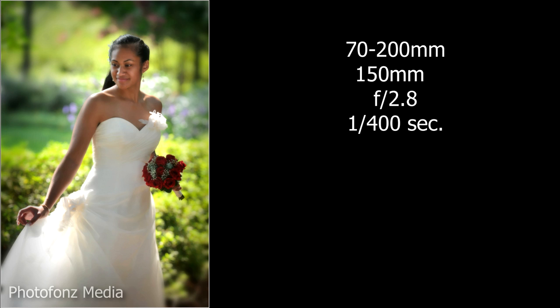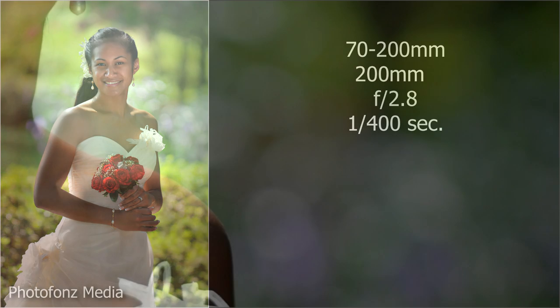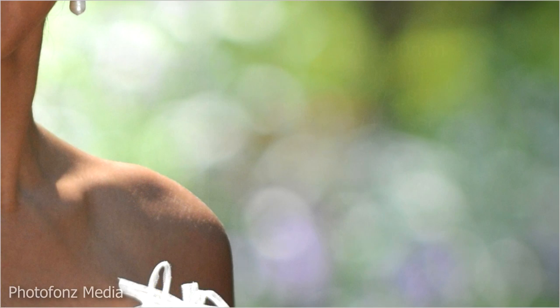Zoomed to 150mm at the same f2.8 aperture, we're already getting some nice background blur and pleasant bokeh. Then zooming all the way to 200mm — still f2.8 — you can see the beautiful blur and bokeh. Cropped in a little closer, you can see those beautiful soft orbs.